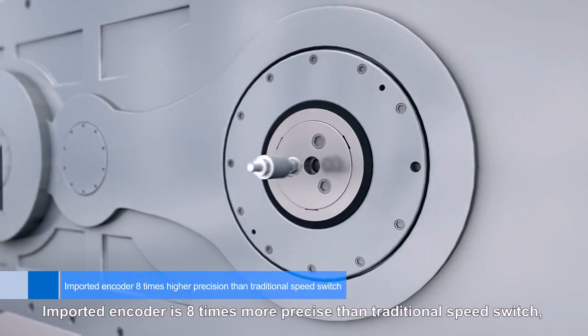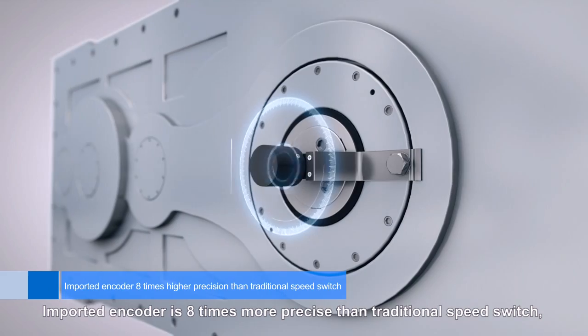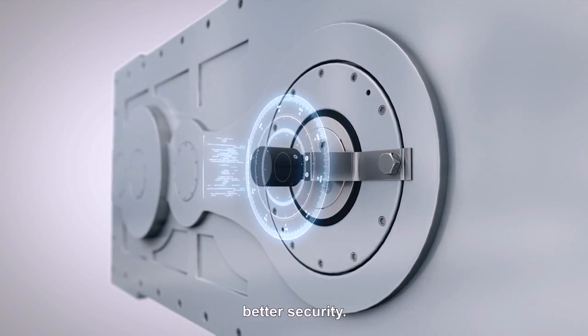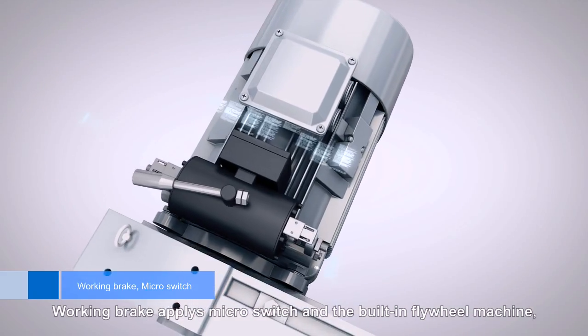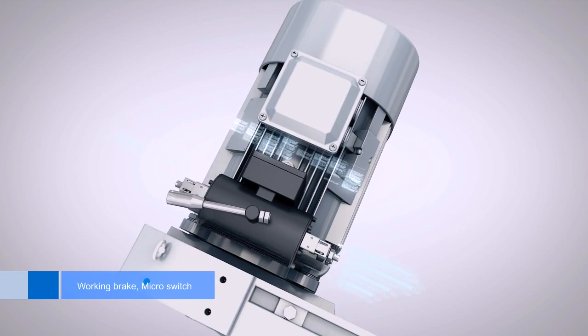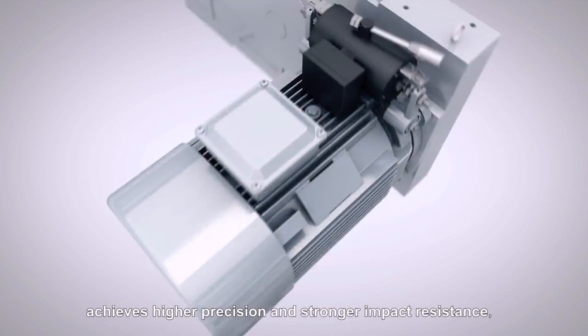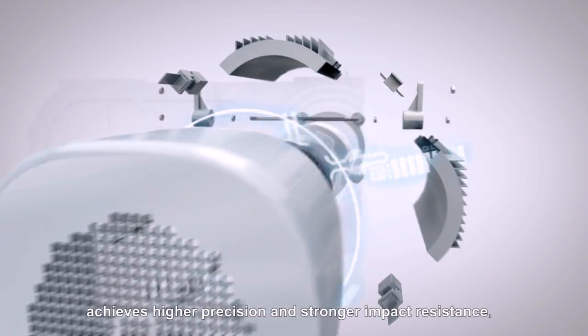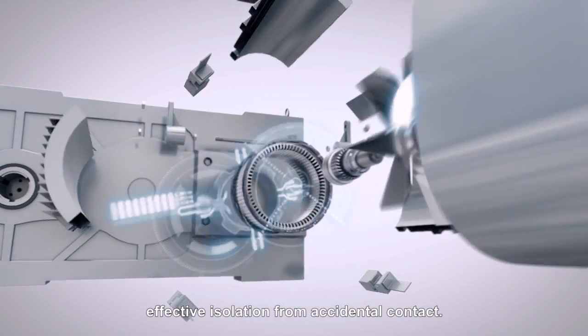Imported encoder is eight times more precise than traditional speed switch. Better security. Working brake applies micro switch and the built-in flywheel machine. Achieves higher precision and stronger impact resistance. Effective isolation from accidental contact.